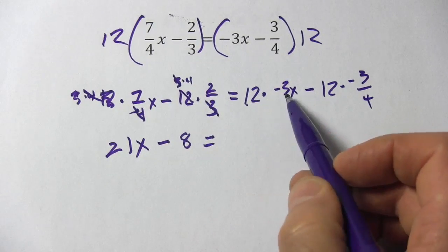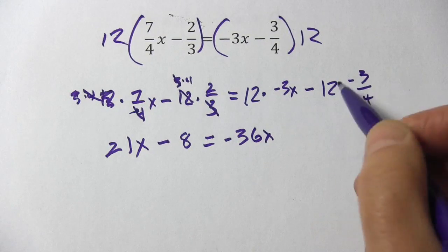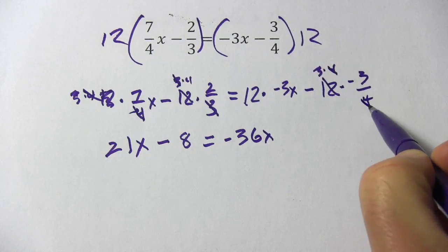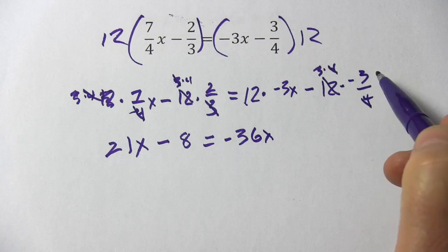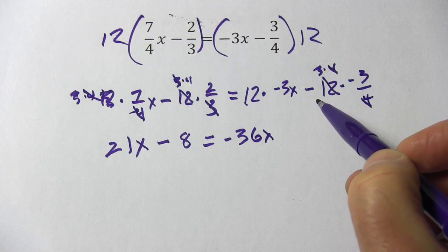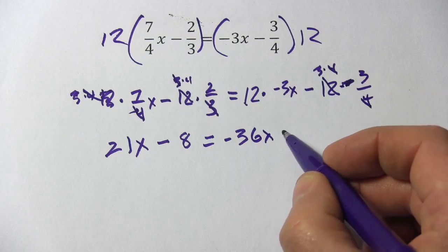And then over here 12 times negative 3 is negative 36x. And then over here I'm going to do the same thing: 3 times 4, the 4s will cancel. We get 3 times... Oh, I put my minus sign twice here, didn't I? 3 times 3 is 9, so this is minus 9.